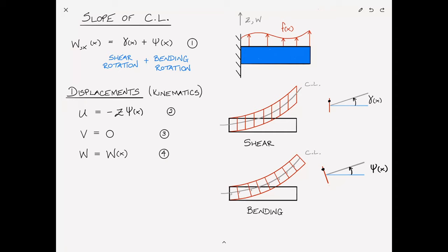Now that we've got the displacements, we can find the strains, which we'll need to find the strain energy for the beam. The expression for the strain tensor εij, from your basic strength of materials or elasticity course, is εij = ½(ui,j + uj,i), where we have omitted higher-order nonlinear terms. These represent the linear strain-displacement relations. So εij is one-half of the derivative of ui with respect to j, plus the derivative of uj with respect to i.